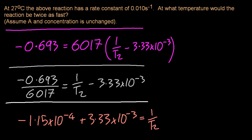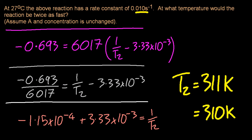And finally, I get a value of T2 is 311 Kelvin, which really should be 310 Kelvin to two sig figs. Okay, that makes sense. It's higher than the initial temperature for a faster reaction. So that looks good.